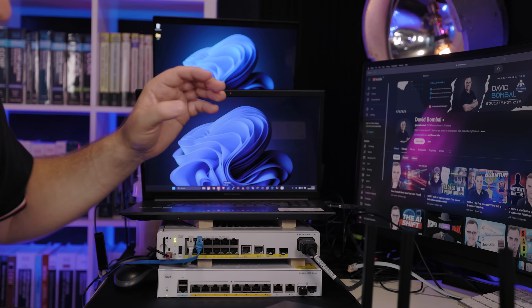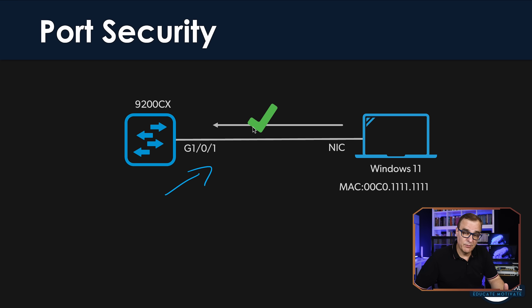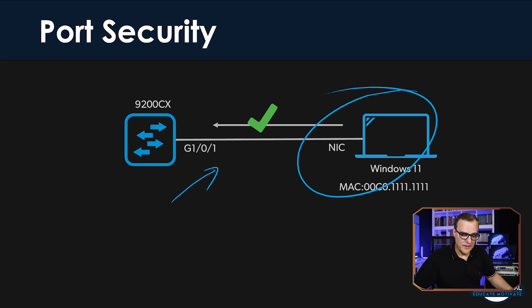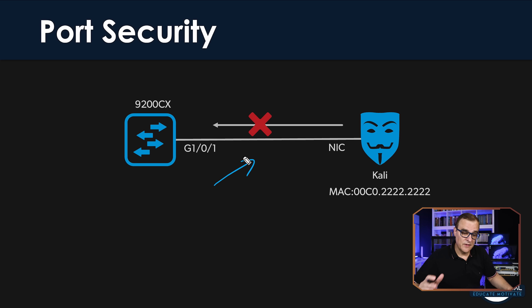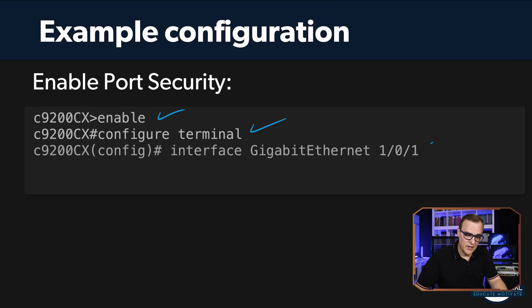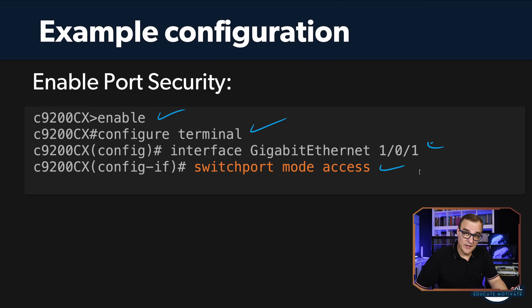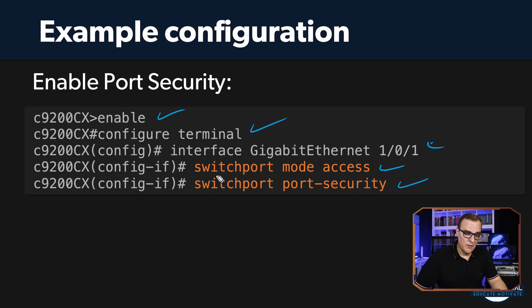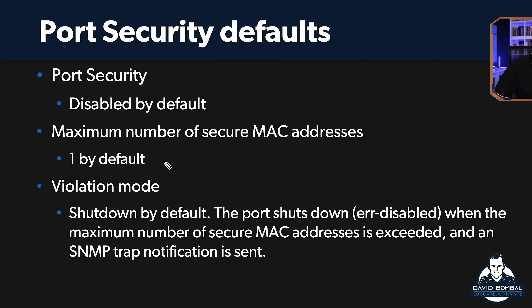Now, rather than just discussing the theory, I'm going to configure port security right now on the switch. To do that, we go to global configuration mode, go onto an interface, make sure it's an access port, and then enable port security. Port security can be enabled on either an access port or a trunk port, but you have to explicitly set that — you have to say this port is an access port or a trunk port, and then you can enable port security.